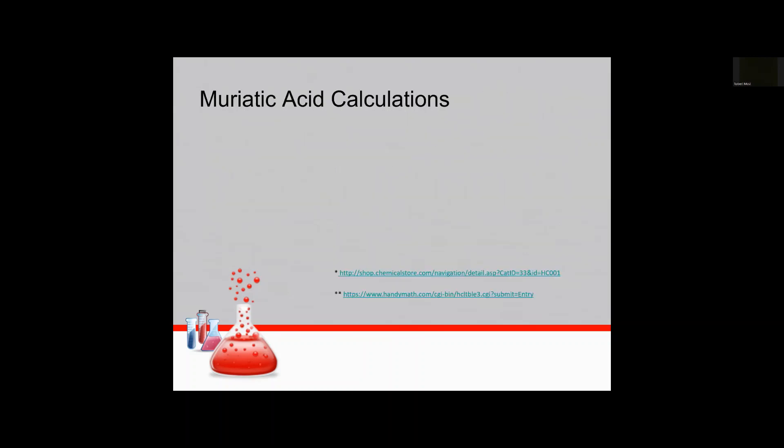All right so the first step for muriatic acid let's start there. So muriatic acid or HCl by its label at 20 degrees C is about 31.45 percent HCl by mass. Once you have that you use the HCl density at 20 degrees C which is 1.157 kilograms per liter and at 31.45 percent if you multiply those two together you get 363.9 approximately grams per liter of HCl at this concentration at this temperature. And there's a couple references there where I got these numbers from.